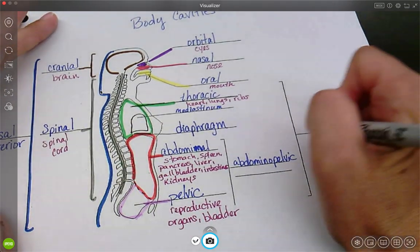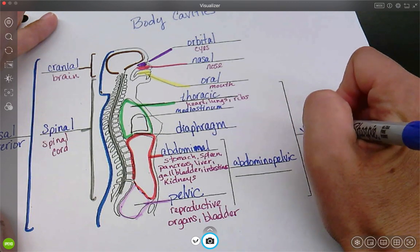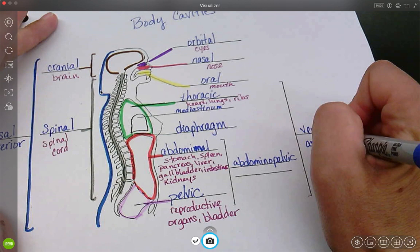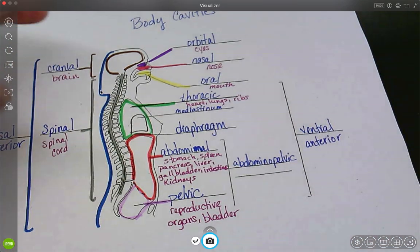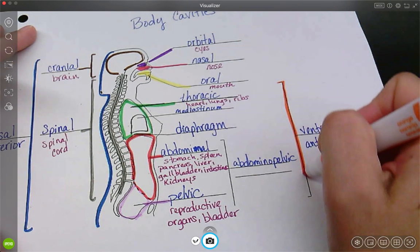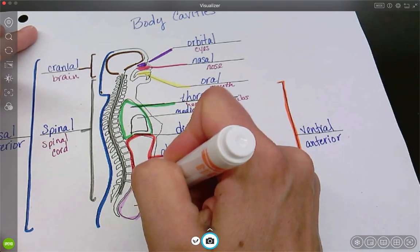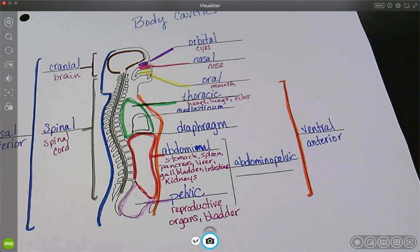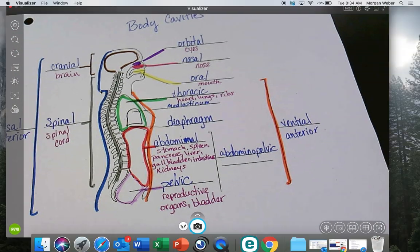And then the last one, what is the front of the body called? Ventral or anterior, and so we will mark that, and that's going to be the front. All right, that's it.